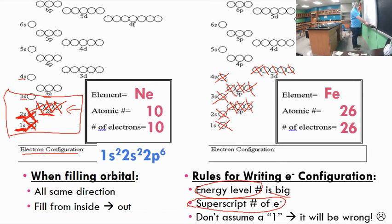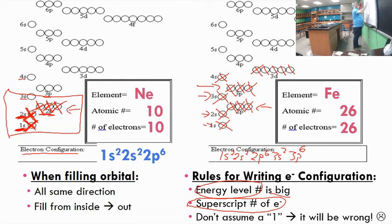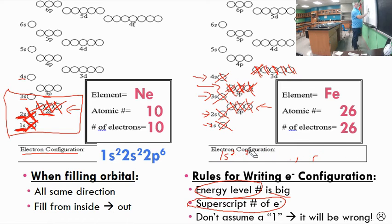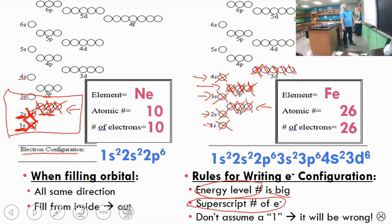Reading iron's electron configuration from the bubble chart: 1s², 2s², 2p⁶, 3s², 3p⁶, 4s², 3d⁶. That's a long string because iron is a larger atom. That's how you read off and write the electron configuration from a bubble chart.